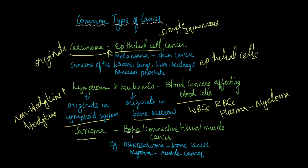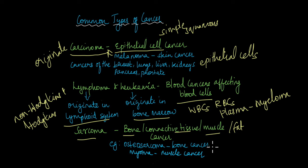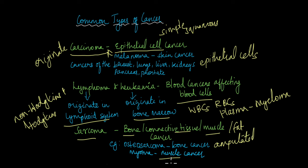Sarcomas are cancers that originate in the bone, connective tissue, muscle, or fat tissue. Osteosarcoma is a very common and dangerous type of bone cancer — a lot of times the part of the bone affected needs to be amputated. Myomas are muscle cancers; if the cancer originates in any of the muscle cells, it is known as a myoma.